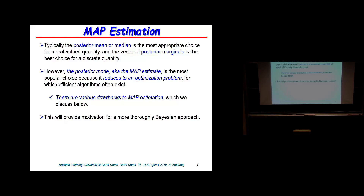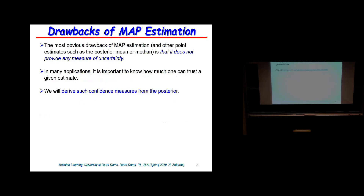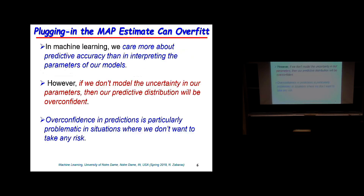Going beyond point estimates: in Bayesian statistics, you want to capture confidence in predictions. A single point estimate is not good enough — we need to take advantage of the full posterior distribution. If we don't model uncertainty in the parameters, the predicted distribution is overconfident. The more parameters the model has, the less confident it should be, and we need to account for this.